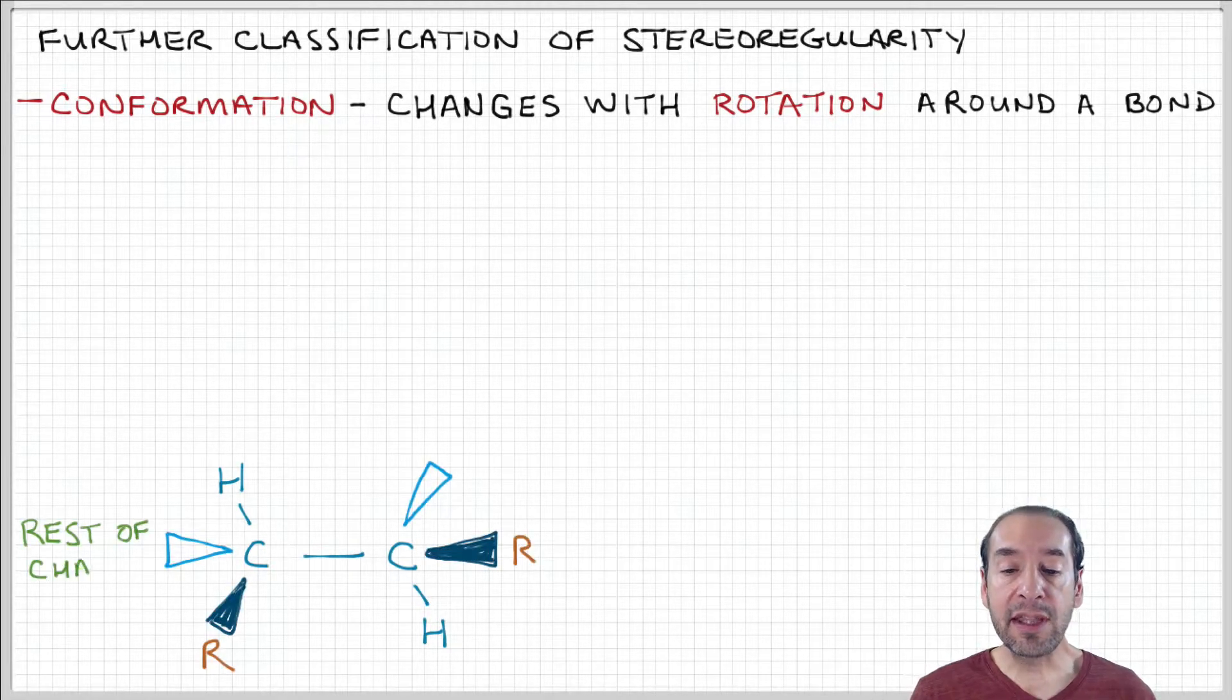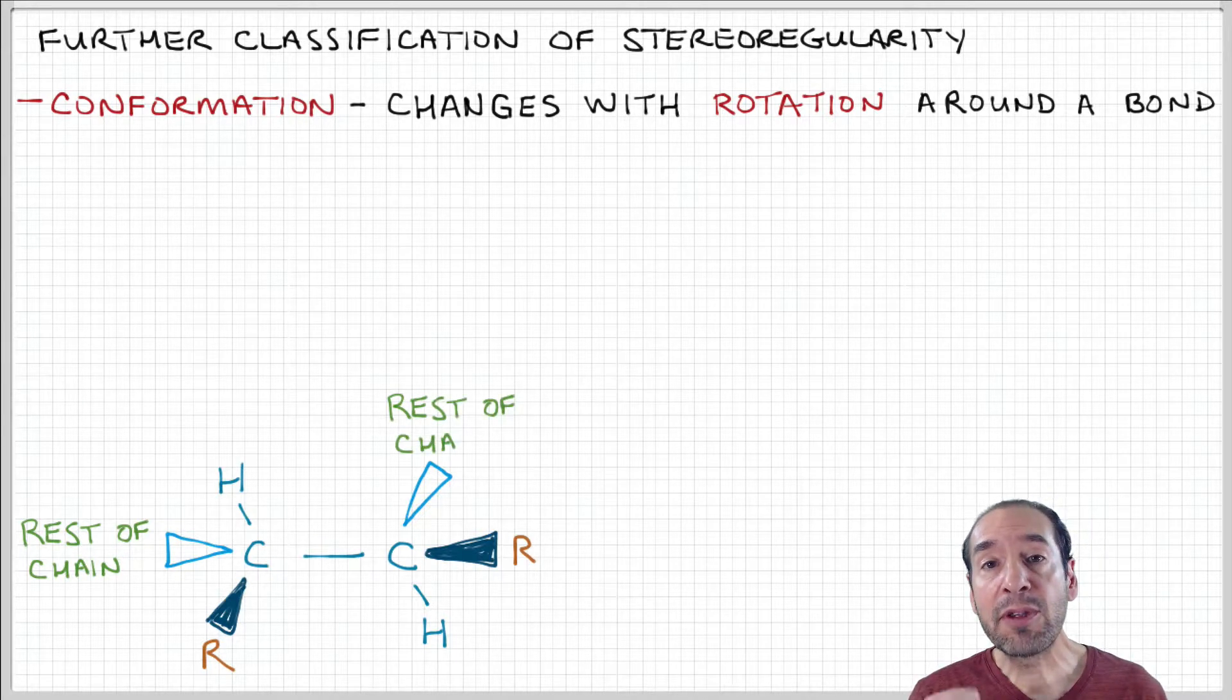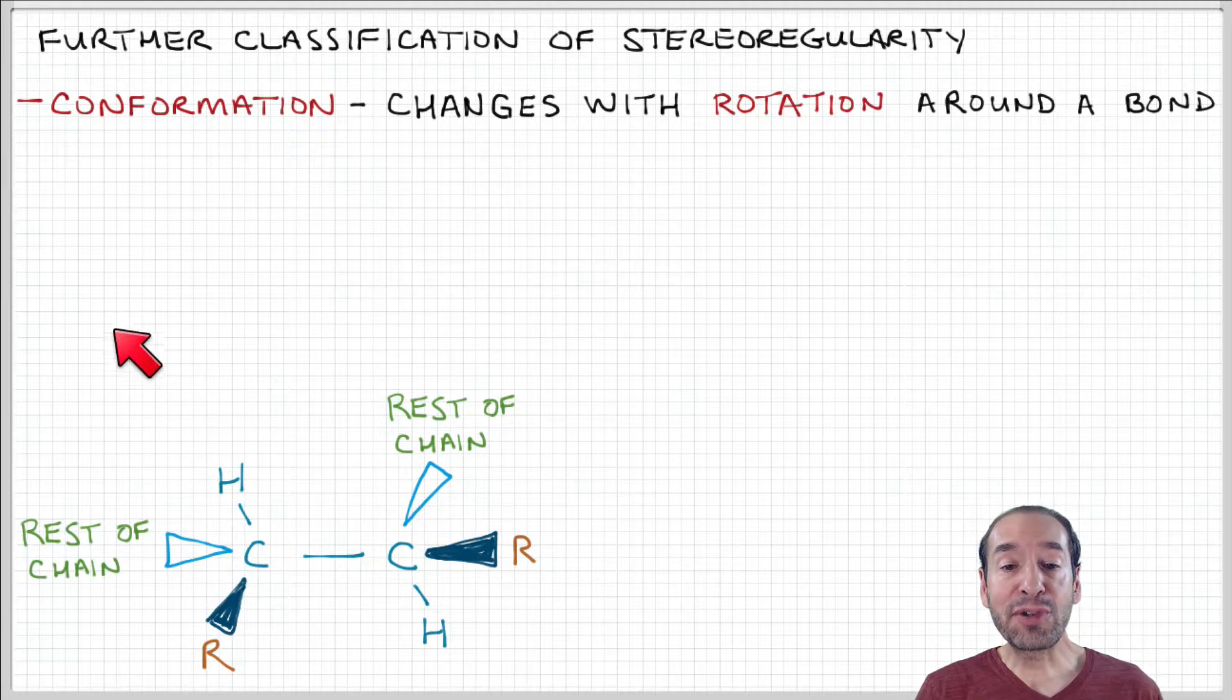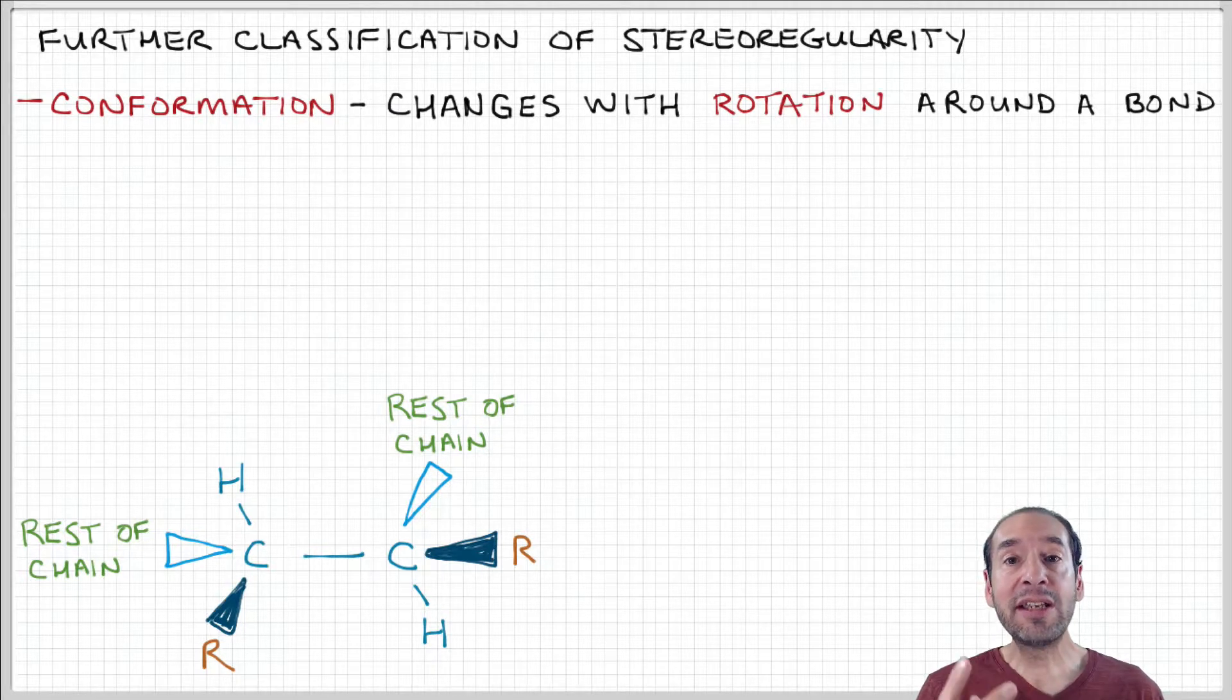So I'm going to try to show that here in these diagrams. So remember that we first drew a polymer chain as sort of a linear structure. Then I showed, when we talked about tacticity, these carbon-carbon bond angles. But actually, these molecules are three-dimensional structures.